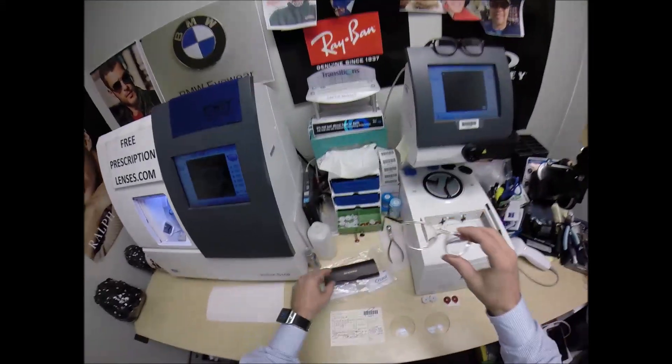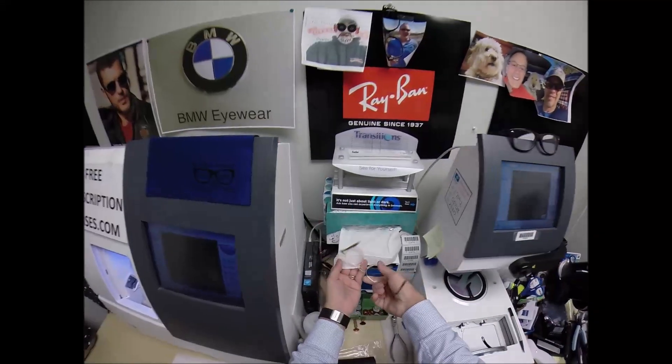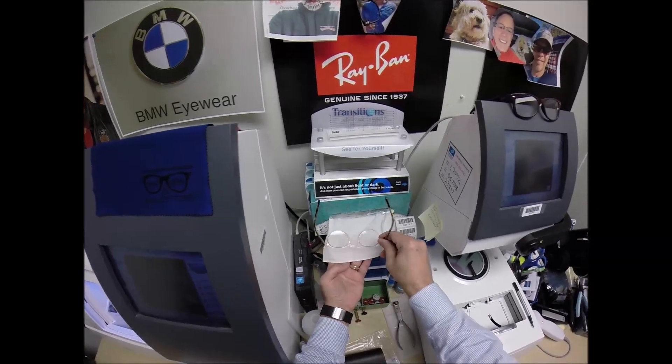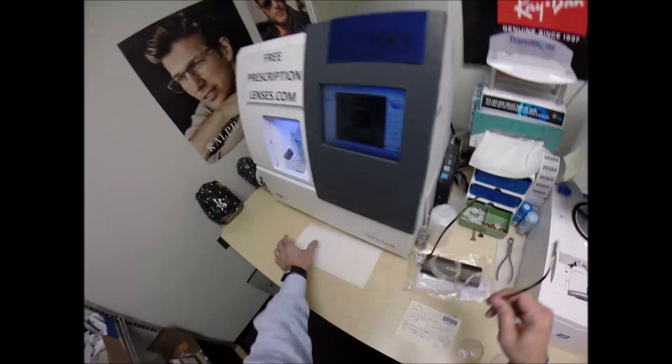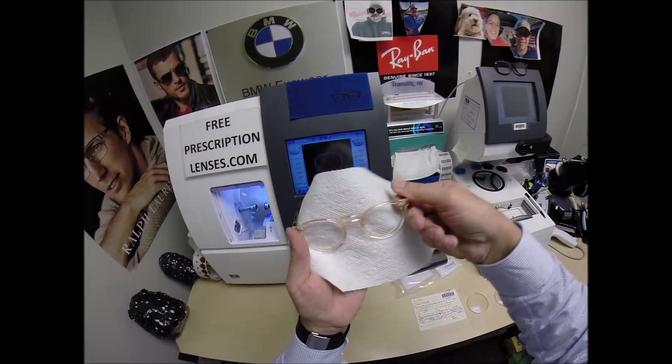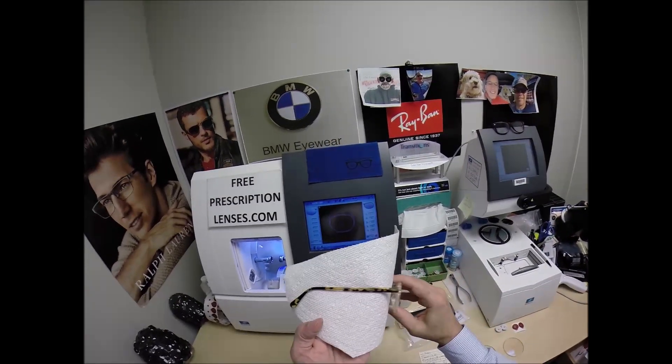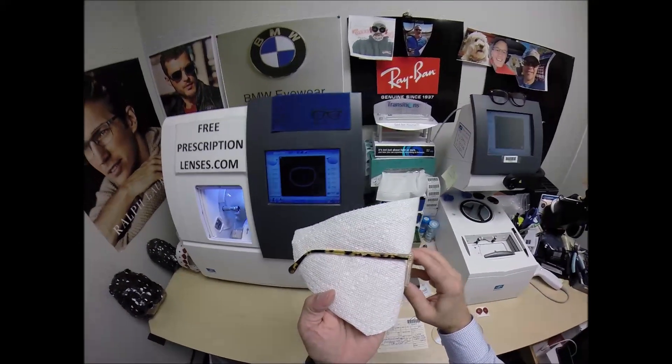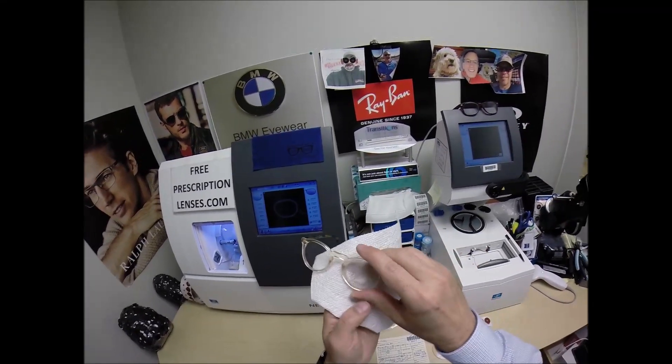They come with a little plastic sleeve on the left temple to protect the temples from rubbing together during shipping from Italy. This is the Buff Tortoise. You can see a little bit of a beige color to it, it's not a true crystal. This is known as Japanese tortoise or English tortoise.